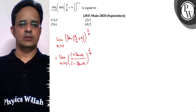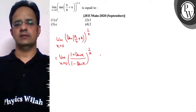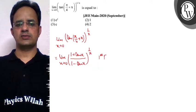Now if we substitute x equal to 0, this limit is tending to 1 and it is infinite, so it is of the form 1 raised to power infinite form.